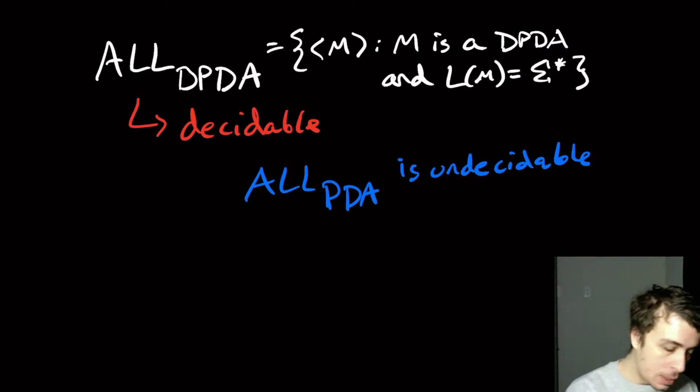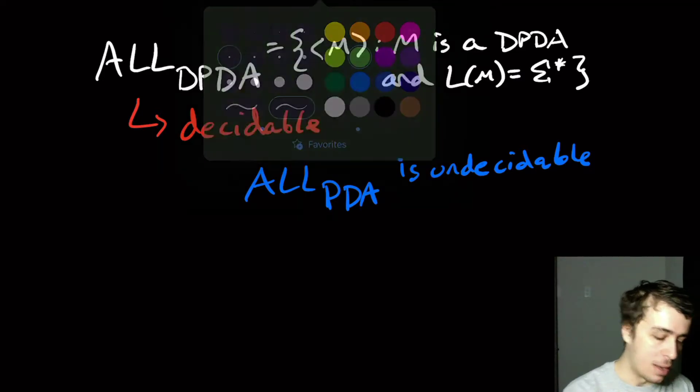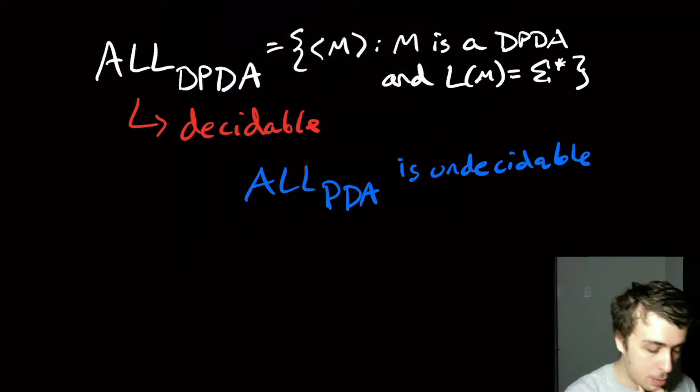Anyway, well, what we want to show here is that the deterministic version is decidable, whereas the non-deterministic version is undecidable, which is a nice characterization of when it's decidable versus undecidable. So, it's actually pretty easy to do.